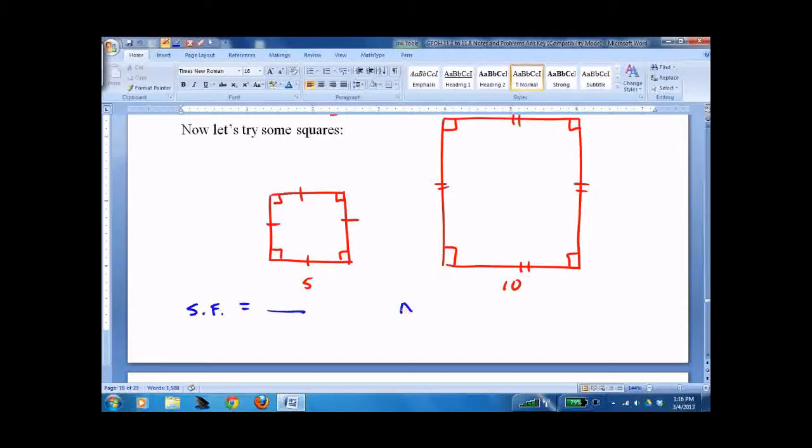Now I'll do it. We get 10 over 5, which is 2 for the scale factor, and the area ratio would be 100 over 25, which is 4.